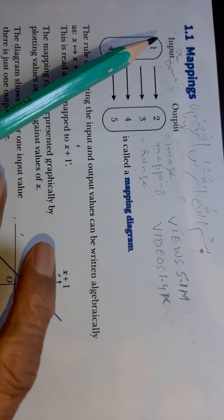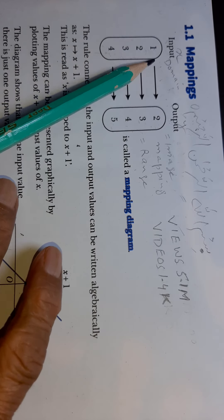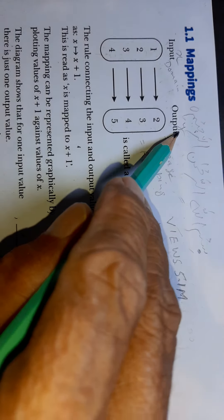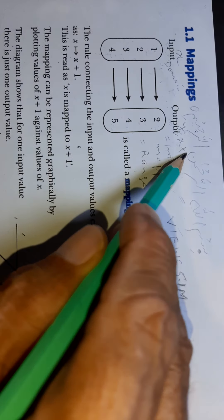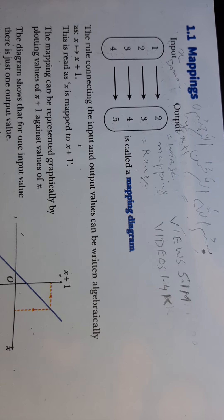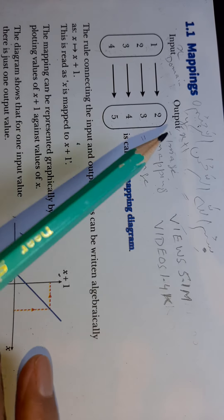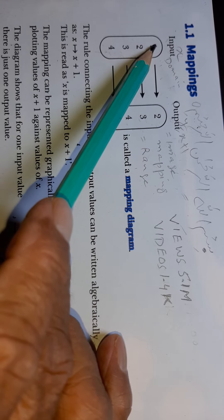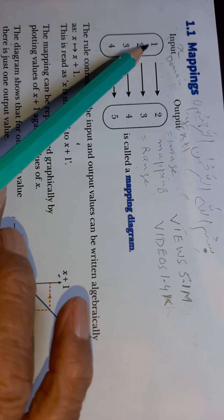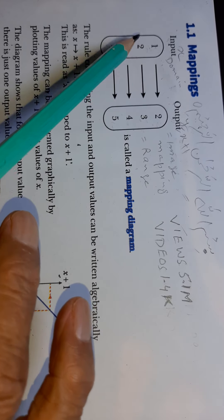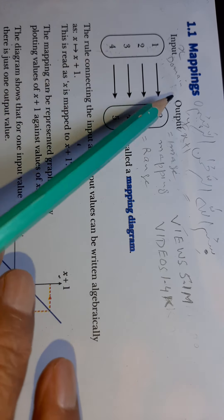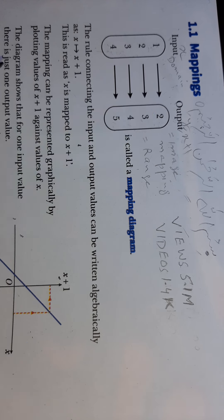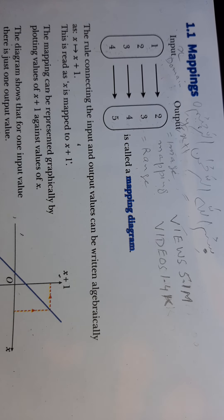If x is equal to one, then y is equal to two. That means we have the function y = x + 1. This diagram shows that for one input value there is one output value. Input one gives output two, input two gives output three, input three gives output four, and input four gives output five. This is called a one-to-one mapping.